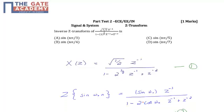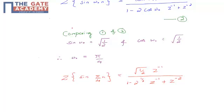If we compare equations 1 and 2, we get sin(ω₀) equals 1/√2 and cos(ω₀) also equals 1/√2. From this, we get ω₀ equals π/4.